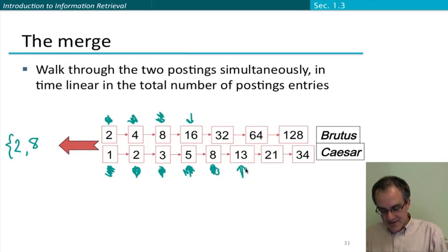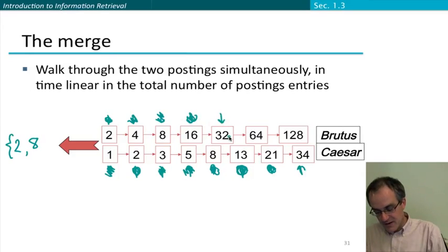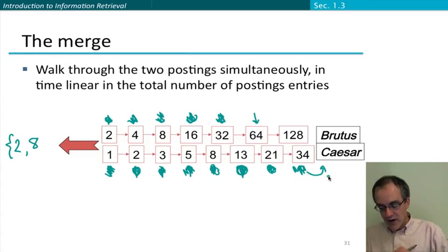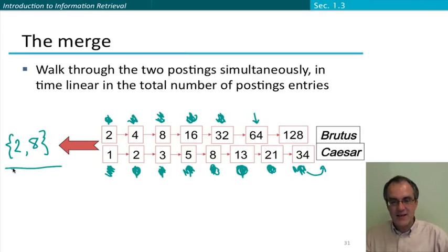Are they the same? No. What we do is advance the smaller one. Are they the same? No. We advance the smaller one. Same, no. Advance the smaller one. Same, no. And at this point, when we try and advance the smaller one, one of our lists is exhausted. And so then there can be no other items in the intersection and so we can stop. And so this is our return document set. Documents two and eight contain both Brutus and Caesar.